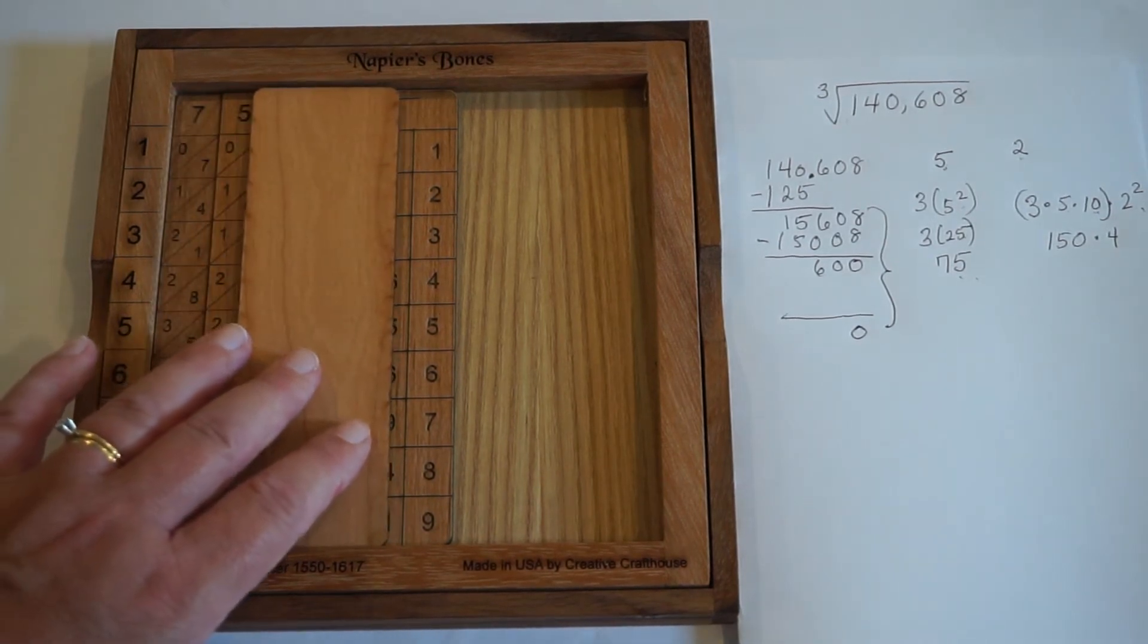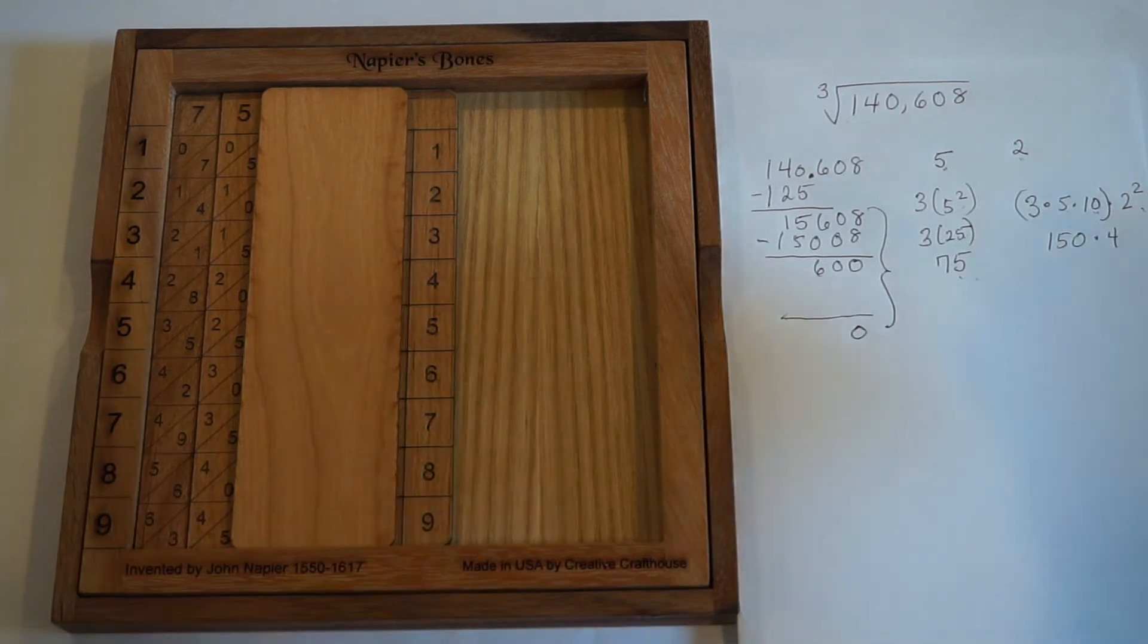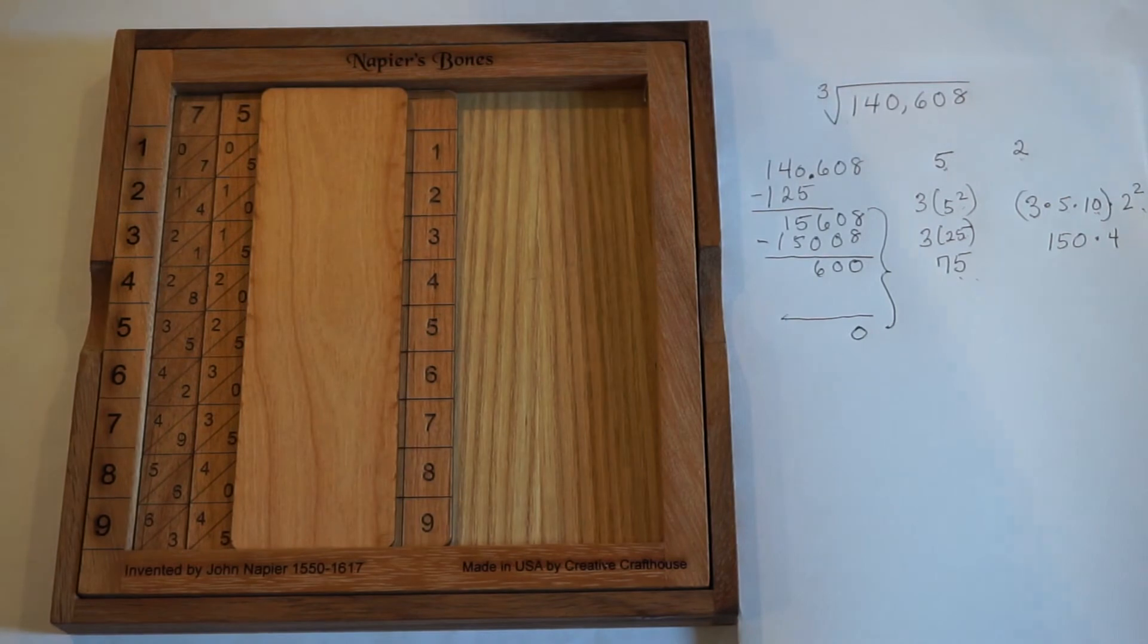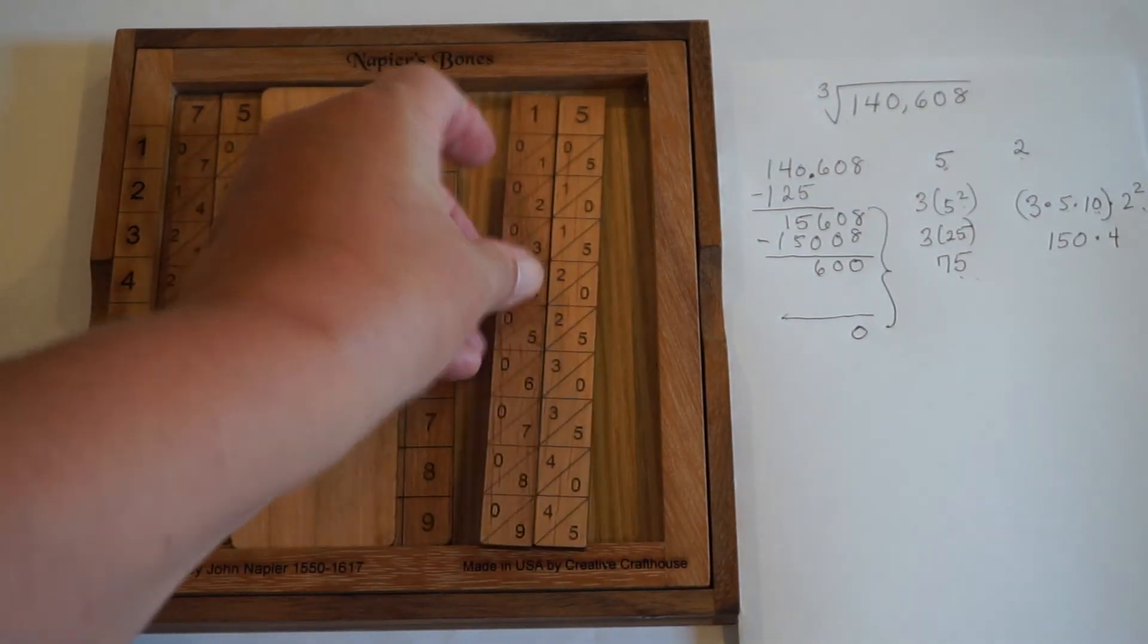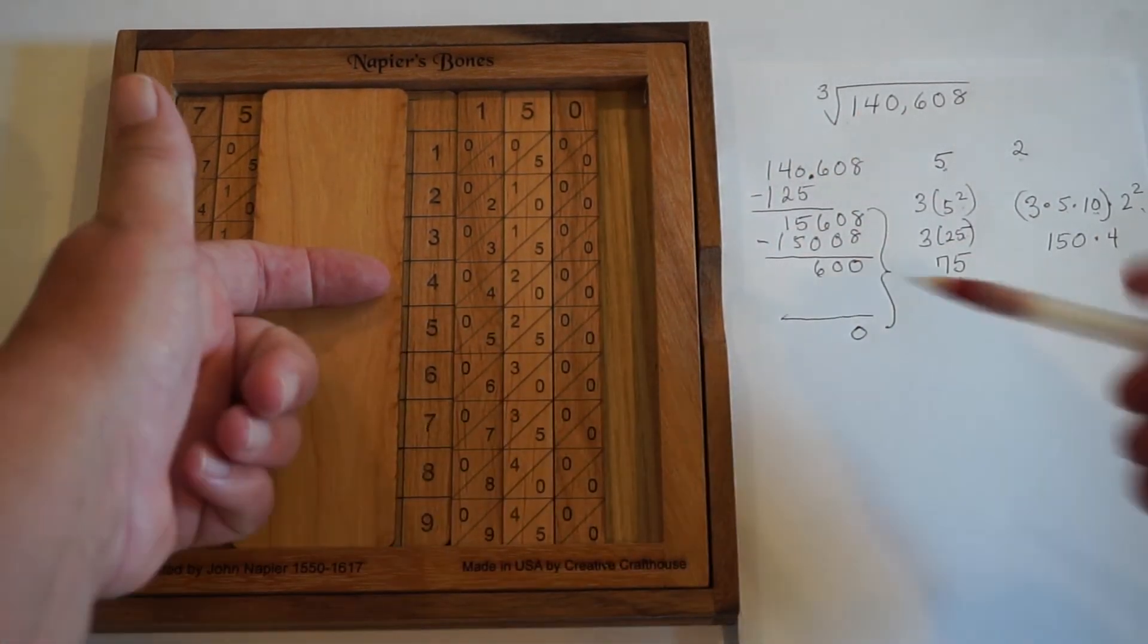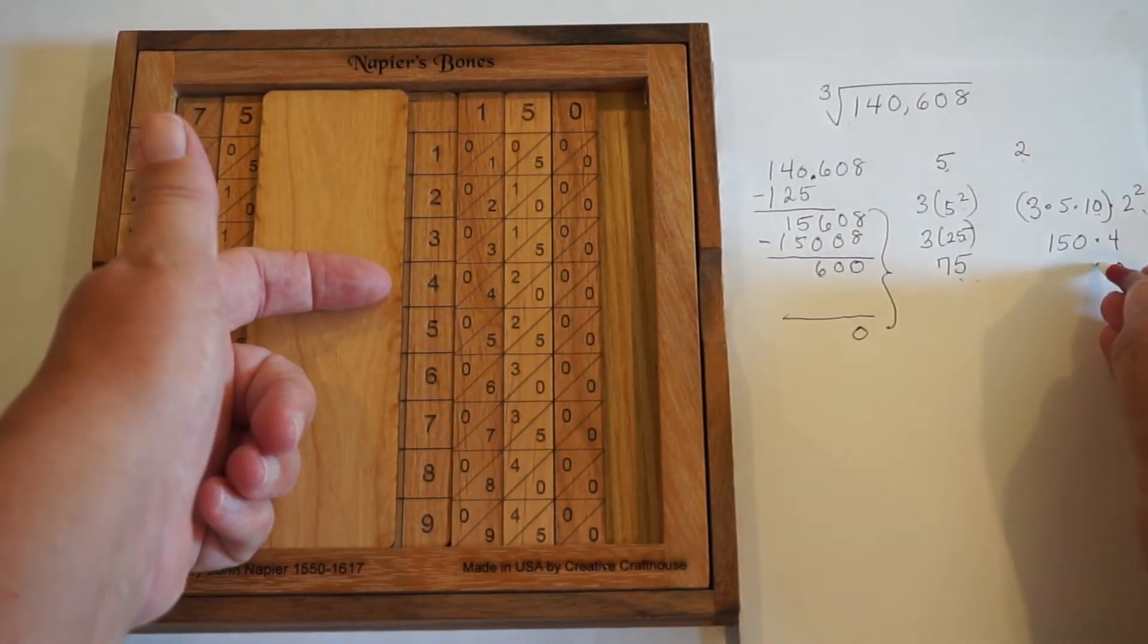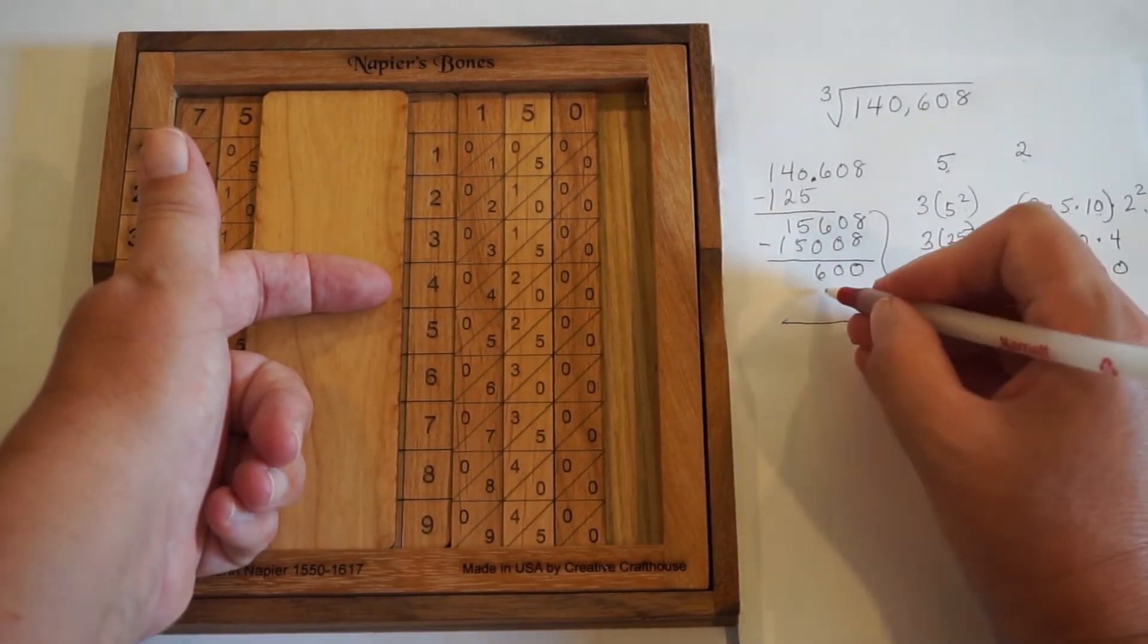I'm going to go ahead and use, I know that 150 times 4 is 600, but I'm going to go ahead and do that using Napier's bones, using our frame here. So I'm going to create the 150, and I'm going to multiply that by 4. What I see is that there's a 0 in the 1s place, a 0 in the 10s place, and 2 plus 4, which is 6 in the 100s place.